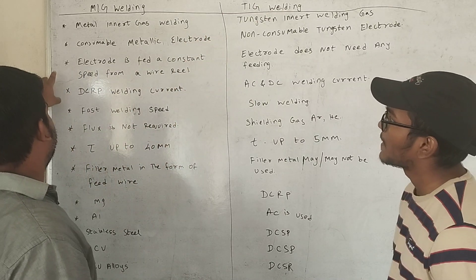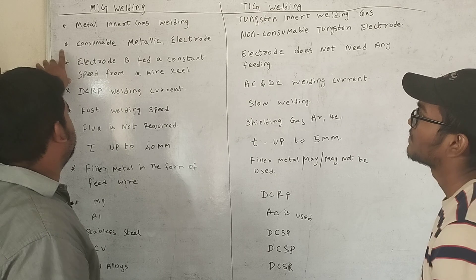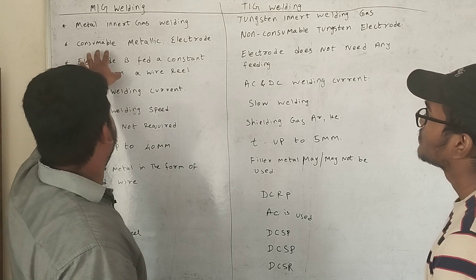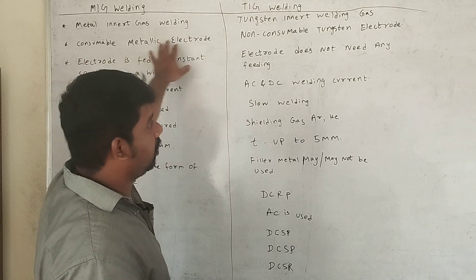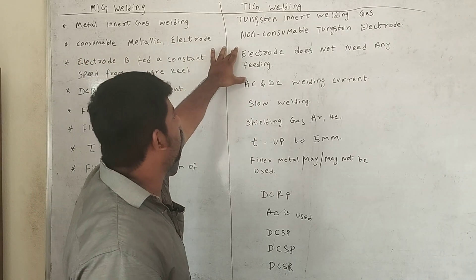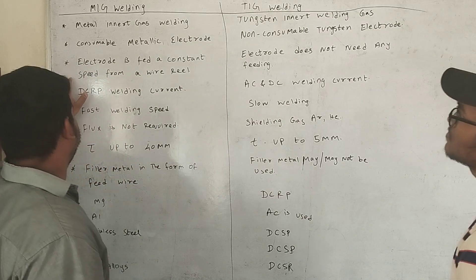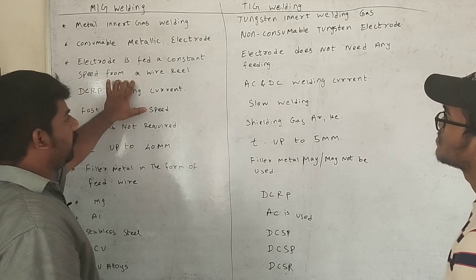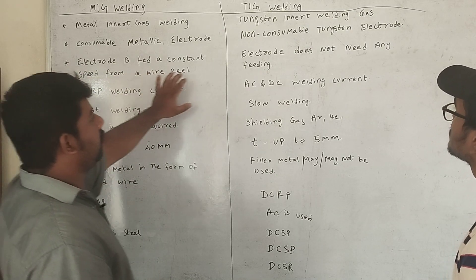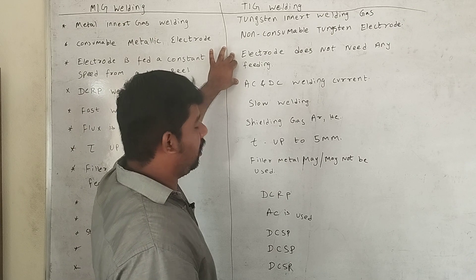In MIG welding, this is a consumable metallic electrode. In TIG welding, this is a non-consumable tungsten electrode. The MIG electrode is fed at constant speed from a wire reel, whereas the TIG electrode does not need any feeding.